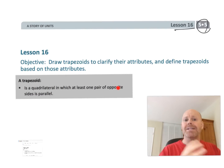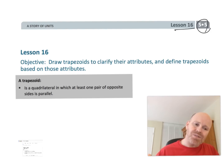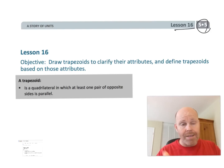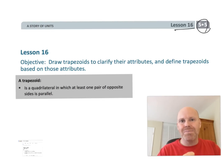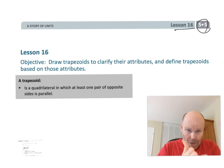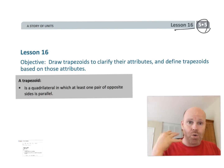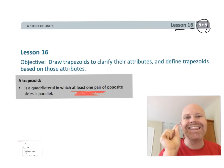We prefer the inclusive definition because college-level texts use 'at least one pair of opposite sides being parallel.' Since Common Core is college and career ready, if we want students to be ready for college, let's start teaching them the definitions they'll encounter there. So from now on, a trapezoid is a four-sided figure — a quadrilateral — that has at least one pair of opposite sides that are parallel.